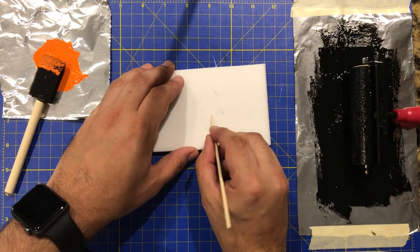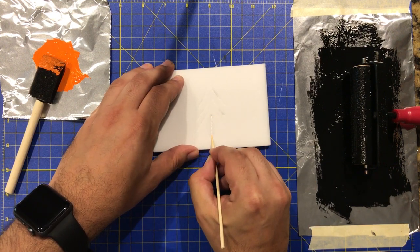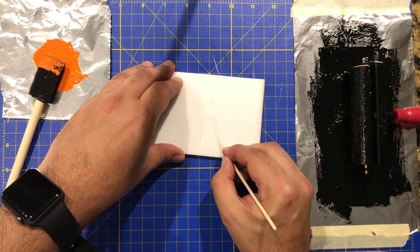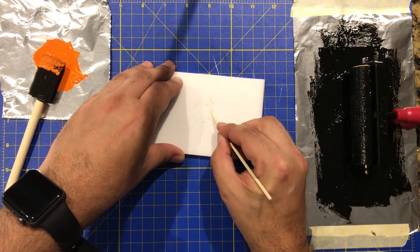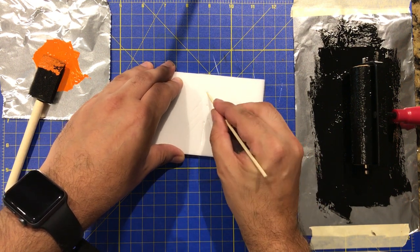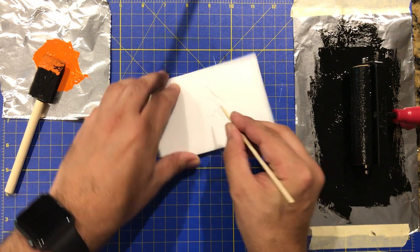Then we'll use something else. Could be a crayon, pencil, pen or like me a barbecue skewer. And we just want to dig the lines into the foam.